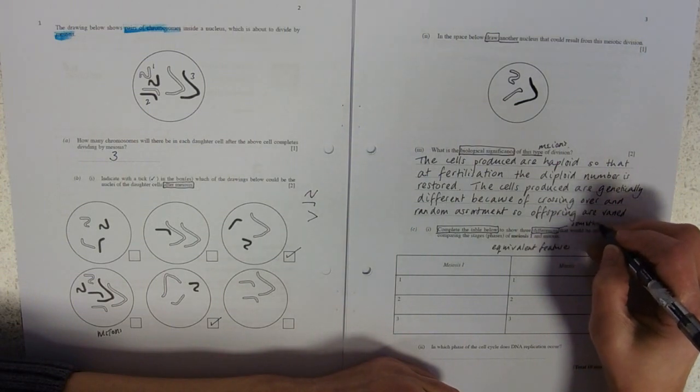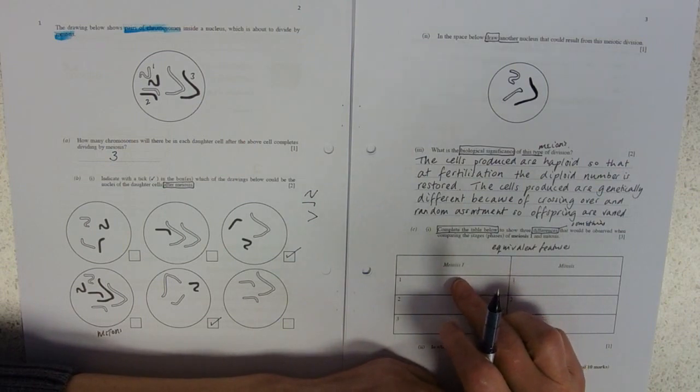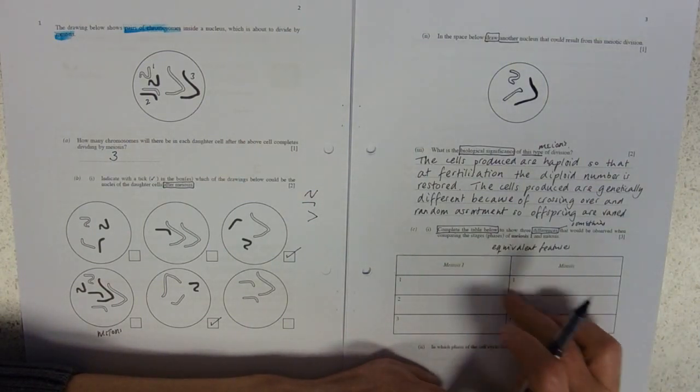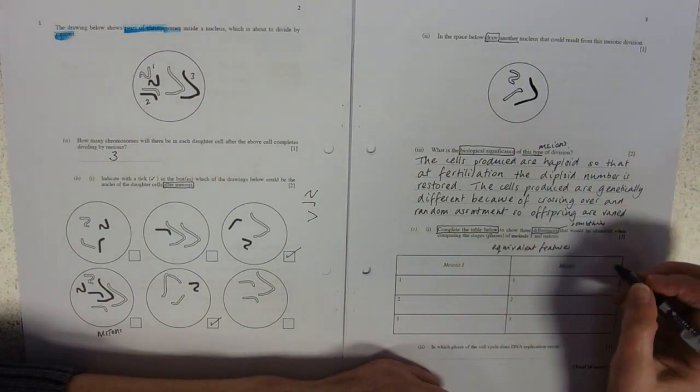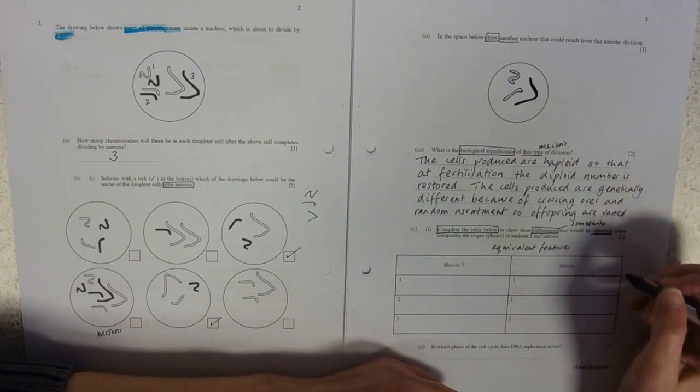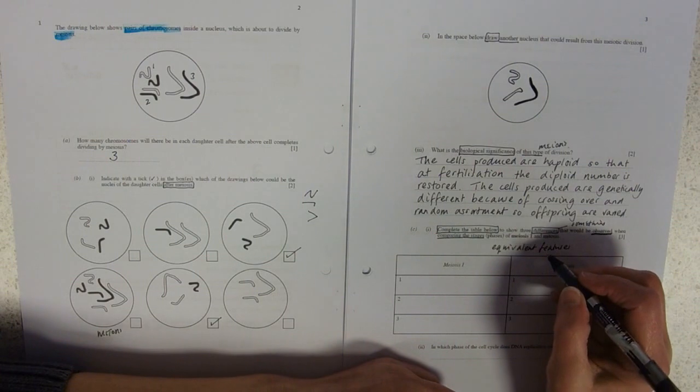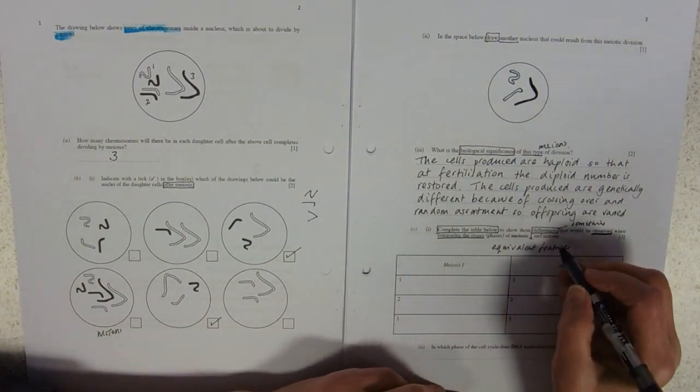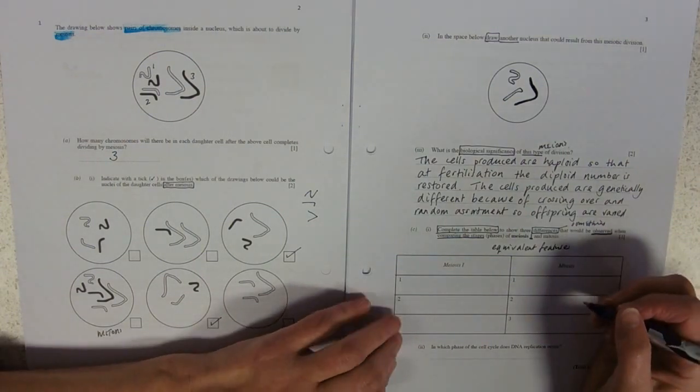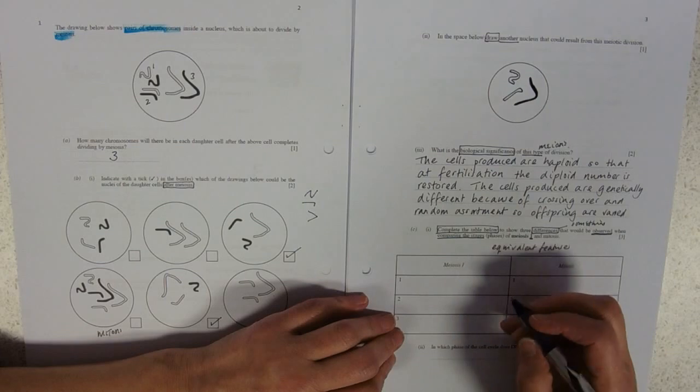So differences means say something about each, and they should be in equivalent boxes. There's no use putting, you know, this meiosis one has crossing over, mitosis, and then put no crossing over down there. It's got to be in the opposite box. It would be observed. Some things that you can see when comparing the stages, meiosis one and mitosis.